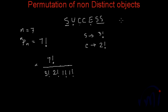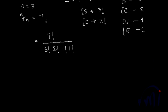Here we have total 4 letters which are used in this word. S has 3 repetitions, C has 2 repetitions, U has 1 repetition and E has 1 repetition. So if we try to represent it in general form,